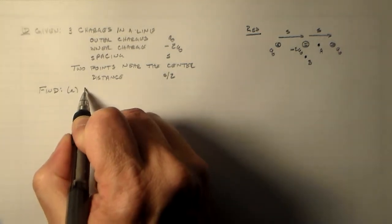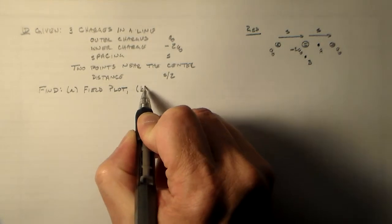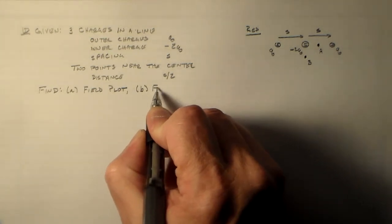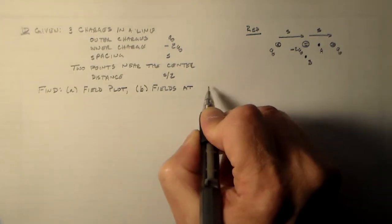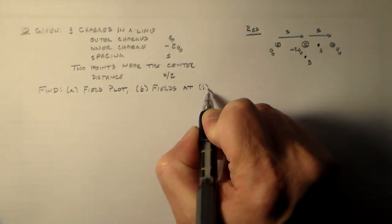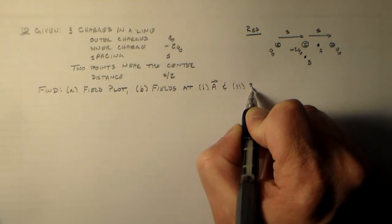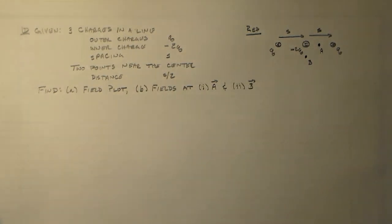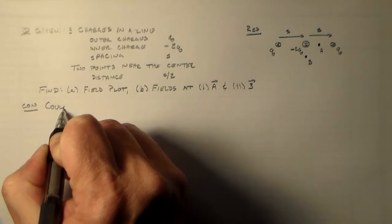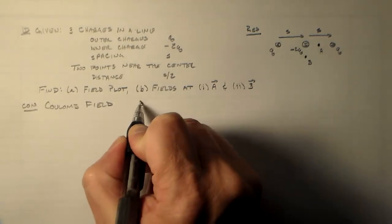And then what we want to do is we want to find, first, the field plot. Second, the fields at A and B. So let's go, I for A and double I for B. So that's our ID, our concept is the Coulomb field, right?